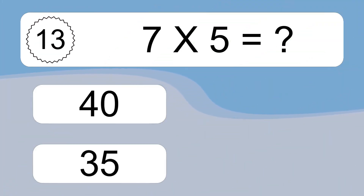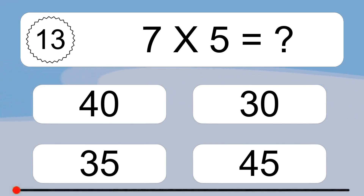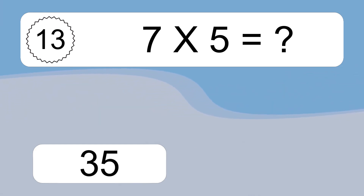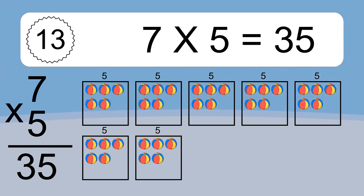7 times 5 equals what? 7 times 5 equals 35. We have 7 boxes, and each box has 5 colorful balls inside. If you count all the balls in all the boxes together, you will have 7 times 5 balls. This equals 35 balls.